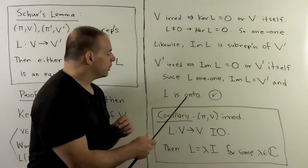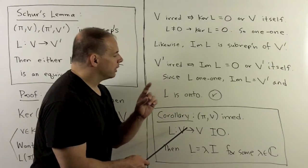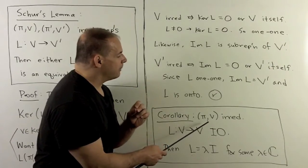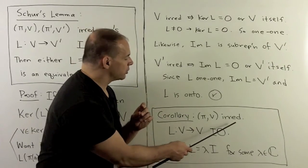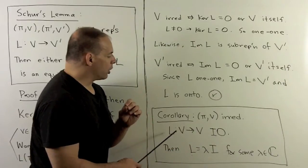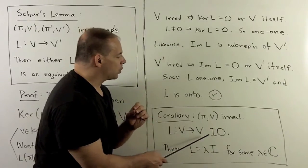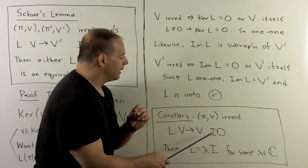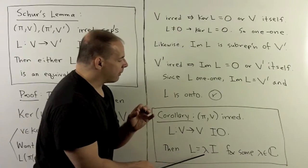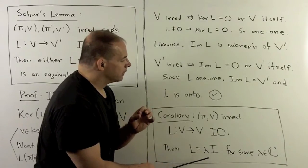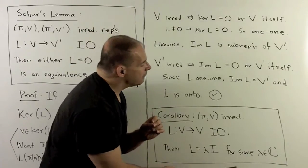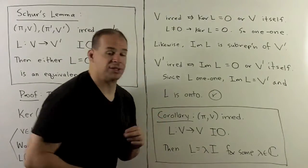Now, first corollary. We assume that V equals V prime — still irreducible. If I have L going from V to V as an intertwining operator, then L must be a multiple of the identity operator. So we're going to have lambda times I for some lambda in C.